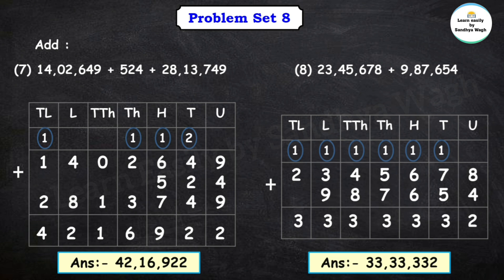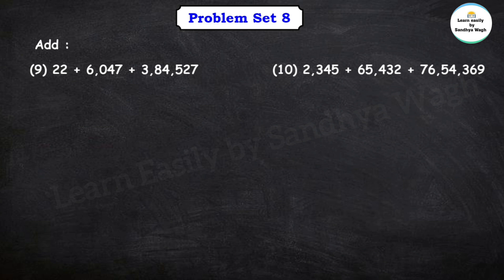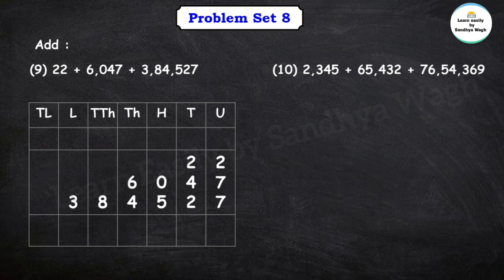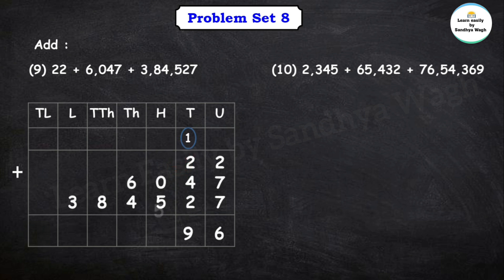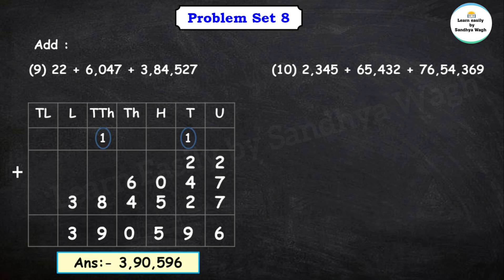Next example: 22 plus 6,047 plus 3 lakh 84,527. Let's arrange and add. 2 plus 7 plus 7 is 16, write 6 in units place, carry 1. 2 plus 4 plus 4 plus 2 is 12, plus carry is 13 — wait: 2 plus 4 plus 2 plus carry 1 is 9. 0 plus 5 is 5. 6 plus 4 is 10, carry 1. 8 plus carry is 9. And 3. So our final answer is 3 lakh 90,596.